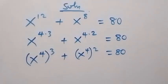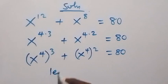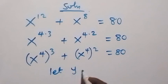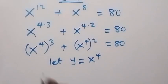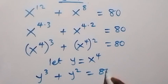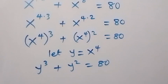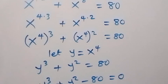From what we have here, we have x raised to power 4 common, so let a letter represent that. Let y be equals to x raised to power 4. Then this equation here will become y cubed plus y squared equals to 80. Taking 80 to the left hand side, this becomes y raised to power 3 plus y squared minus 80 equals to 0.